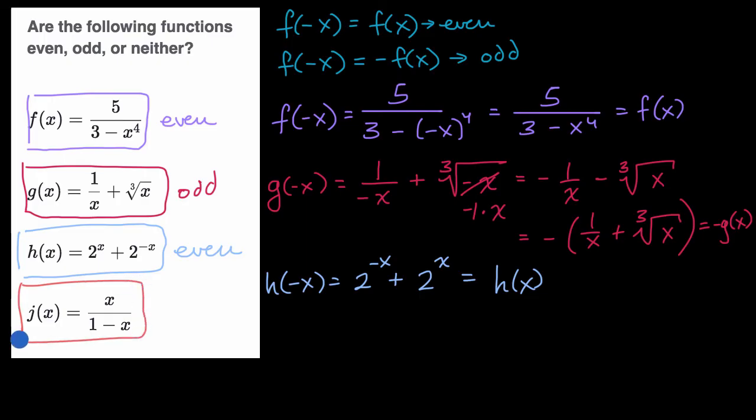And then last but not least, we have j of x. So let's evaluate j of negative x is equal to negative x over one minus negative x, which is equal to negative x over one plus x. And let's see. There's no clear way of factoring out a negative or doing something interesting where I get either back to j of x or I get to negative j of x. So this one is neither. And we're done.